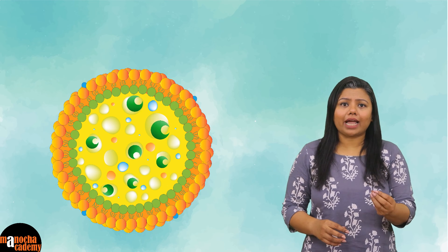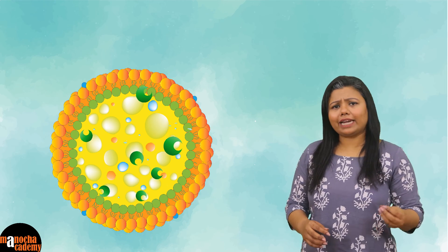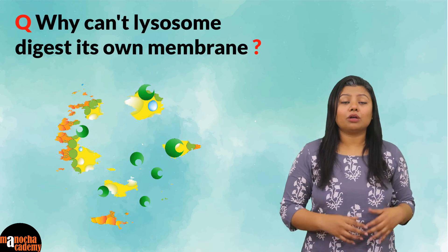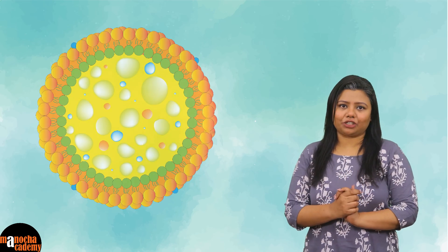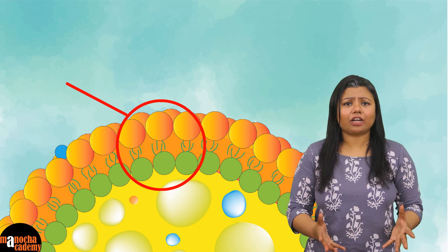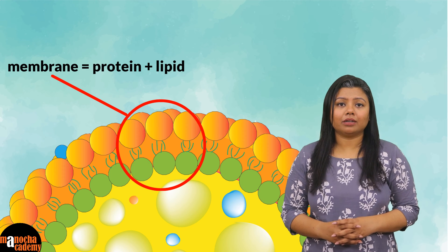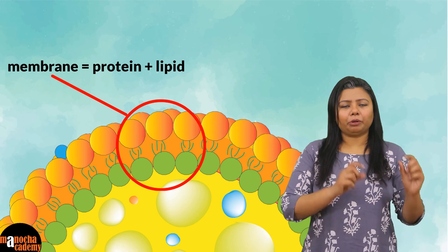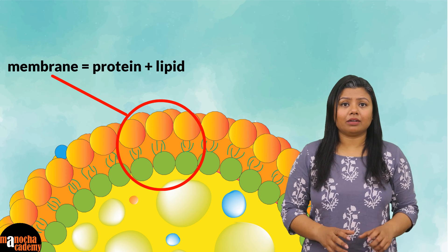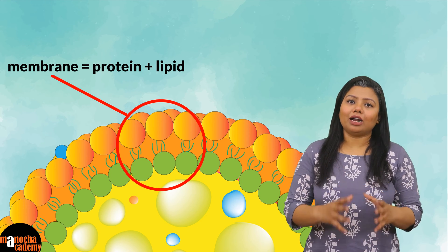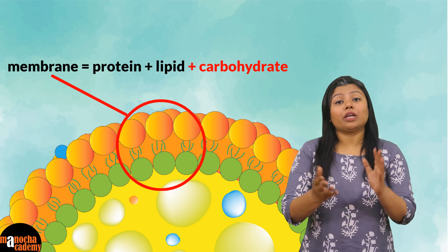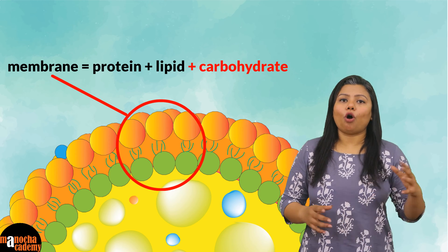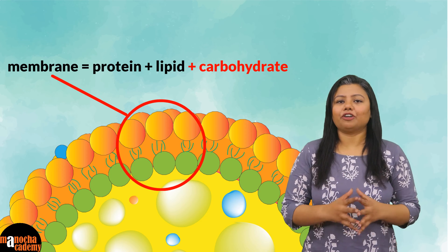Since these enzymes are in contact with their own membrane — made up of protein and lipid — can they not digest it? Of course they can. To prevent that digestion, the membrane covering the lysosome is highly glycosylated, meaning the proteins and lipids remain attached to a large amount of carbohydrates, which reduces the reactivity of the acid hydrolases.